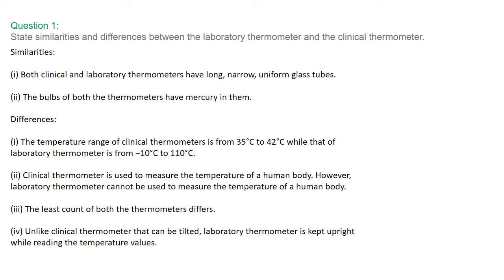Question number one: state the similarities and differences between the lab thermometer and the clinical thermometer. Similarities: both clinical and lab thermometers have long narrow uniform glass tubes, and the bulbs of both have mercury in them. Differences: the temperature range of a clinical thermometer is 35°C to 42°C, while the lab thermometer is -10°C to 110°C. A clinical thermometer is used to measure body temperature; a lab thermometer cannot. The least count of both thermometers differs. Unlike the clinical thermometer, the lab thermometer is kept upright while reading.